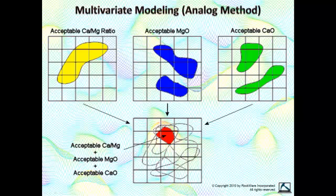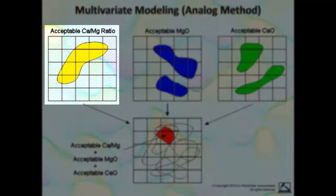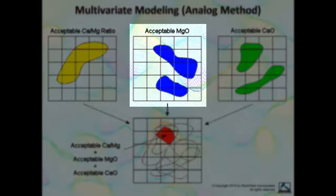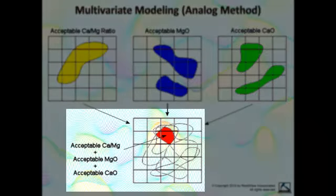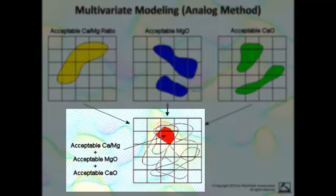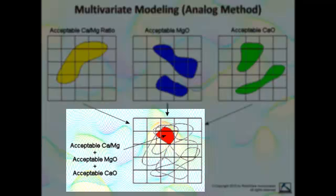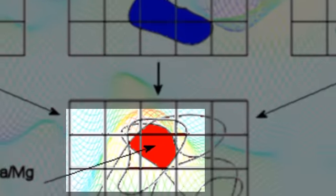In this two-dimensional analog example, we're looking for material that meets a specific set of end user requirements in regards to the calcium-magnesium ratio, magnesium oxide content, and calcium oxide content. By outlining the regions that meet the individual specifications and overlaying these outlines to delineate regions of agreement, we have determined where all of the requirements are fulfilled as shown by the red region.